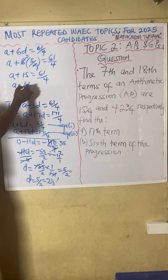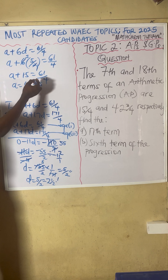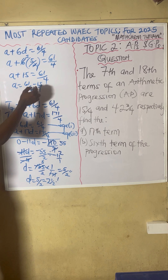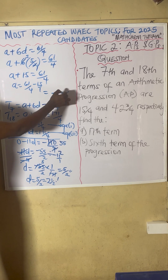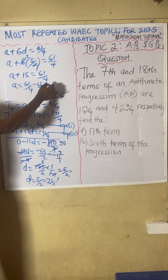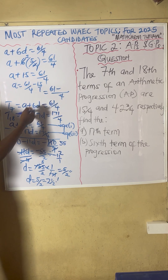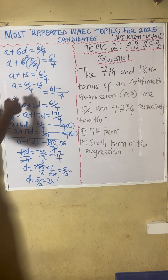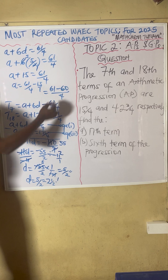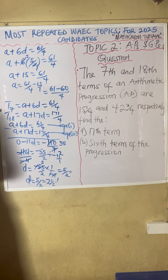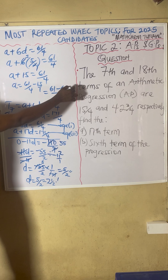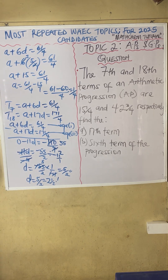A equals 61 over 4 minus 15. Solving this fraction with LCM of 4: 4 into 4 is 1, times 61 is 61; 4 into 1 is 4, times 15 is 60. So 61 minus 60 equals 1. Therefore A equals 1 over 4, meaning our first term is 1 over 4.